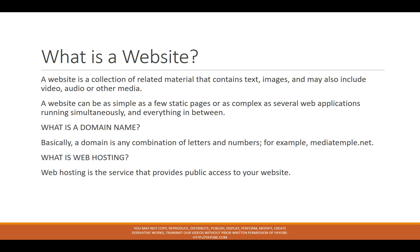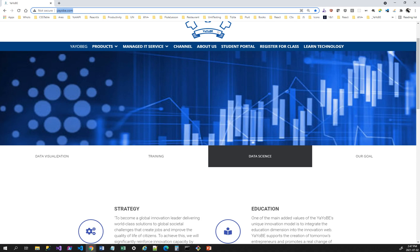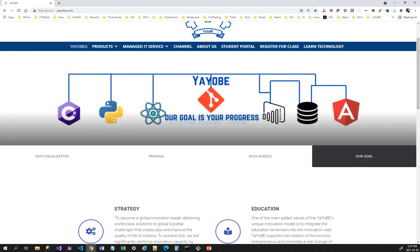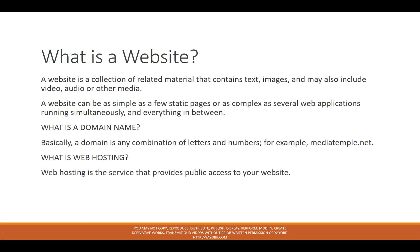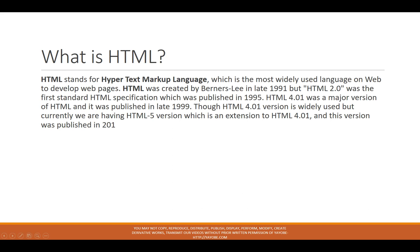So when you come to a website, it's nothing but a collection of related materials that contain text and may include video, audio, or other media. But how does the browser know how a page is written? The communication between the written code and the browser is called HTML. HTML is a language. The last letter, L, represents language. Language means it is an intermediary between your content and the browser.